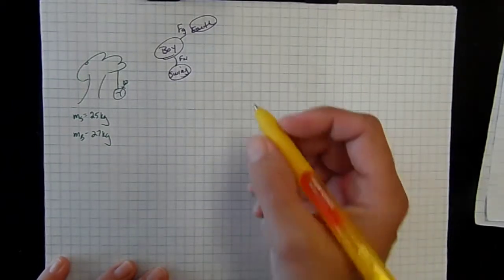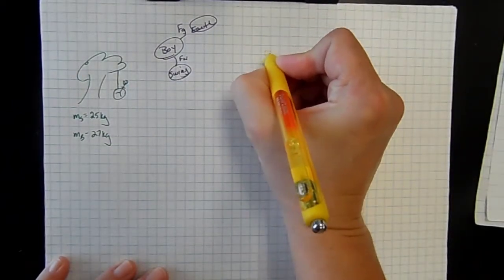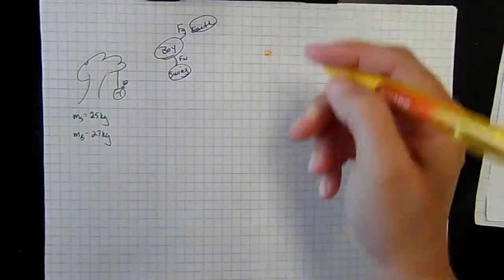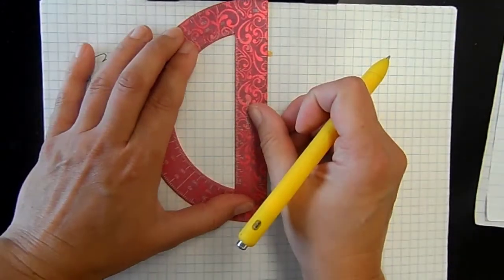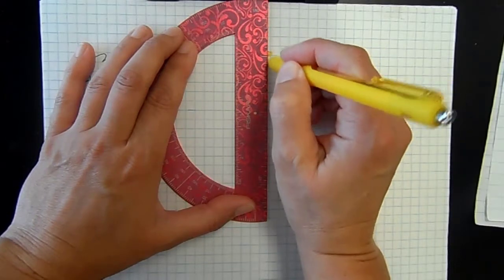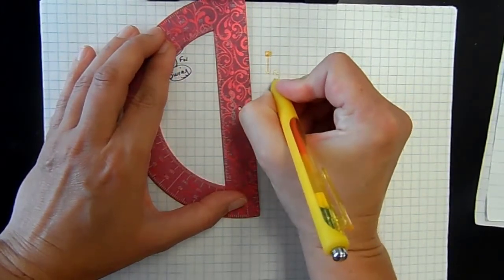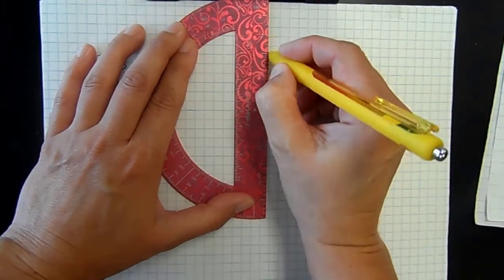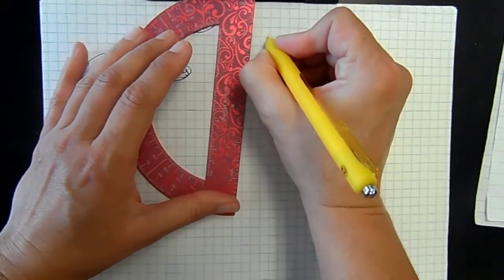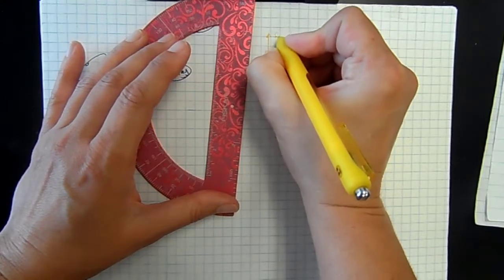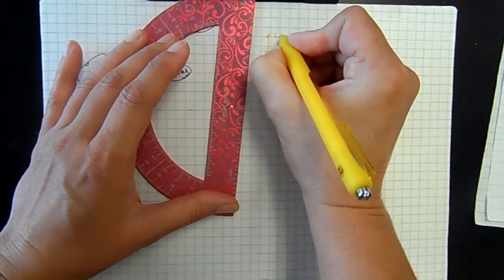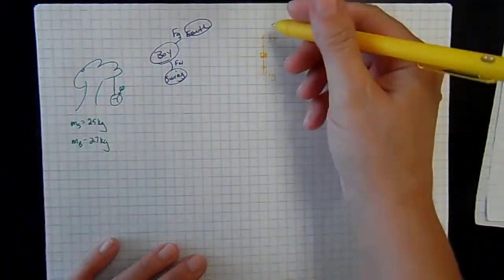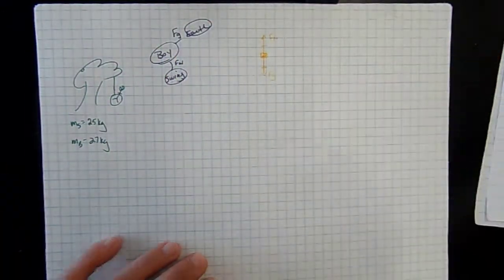Now we want to visualize this in a force diagram. If we draw our boy, he is going to have the force of gravity acting straight down on him, and he is going to have the normal force acting straight up on him. We know that he is at rest, and so these forces are going to be balanced, because those are the only two forces acting in that direction.